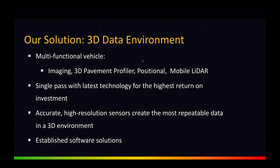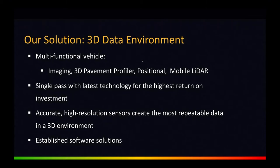We start with a multifunctional vehicle — we want to drive down the road once, single pass, and use the latest technology available to get a good record of the state of the infrastructure surrounding the vehicle. That includes imaging pavement, imaging 3D profiles, very accurate GPS positions, and LiDAR. Since 2007, we've been developing our own LiDAR extraction software, enabling us to efficiently extract information from collected data and get it in the hands of DOT customers who need to make decisions based on risk and the current state of infrastructure.